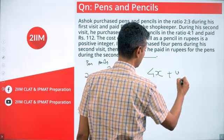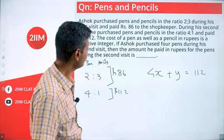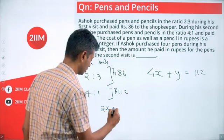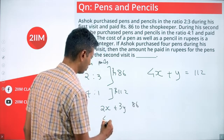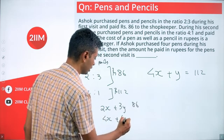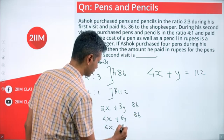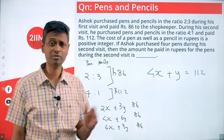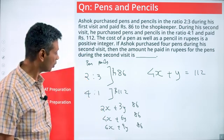In the second visit he buys 4 pens and a pencil for 112. For the first time the ratio is 2:3, so we could have bought 2x+3y for 86, or 4x+6y for 86, or 6x+9y for 86 and so on. x is cost of a pen, y is cost of a pencil.